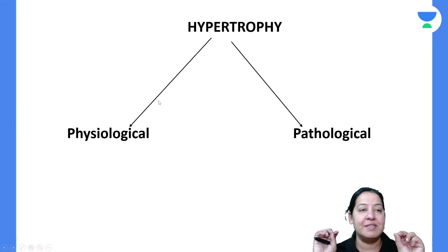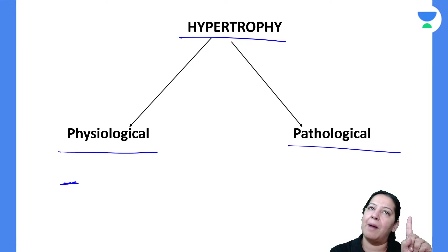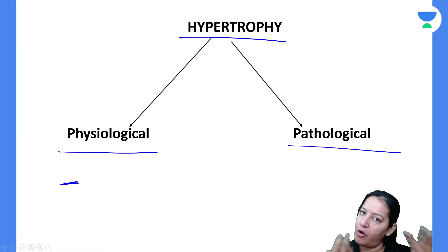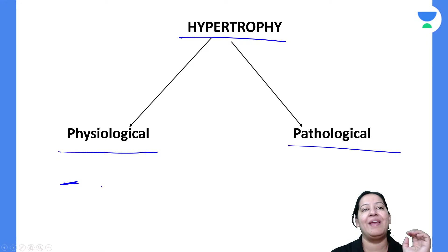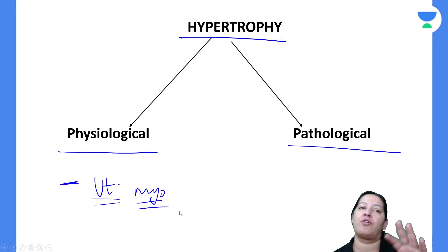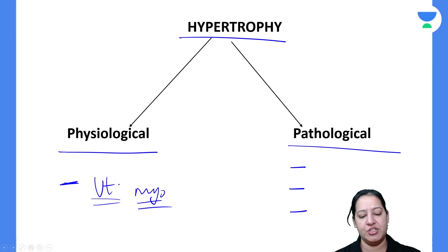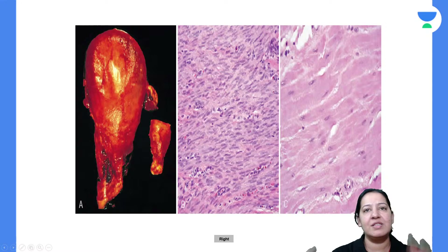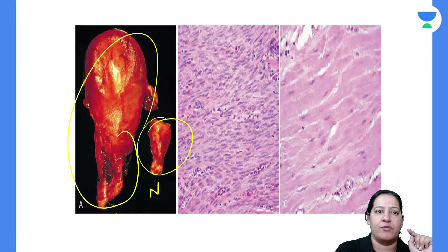Hypertrophy is also of two types: physiological and pathological. There is only one example of physiological hypertrophy — the uterus during pregnancy. The myometrium during pregnancy shows both hypertrophy and hyperplasia. For pathological hypertrophy, there are three examples which I will explain further. The diagram from Robbins shows a normal non-pregnant uterus and a pregnant uterus — appreciate the change in size due to hypertrophy of myometrial cells.